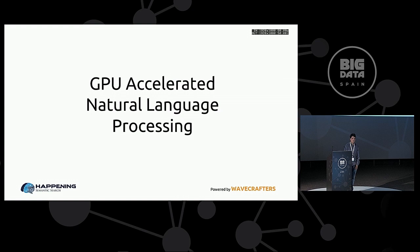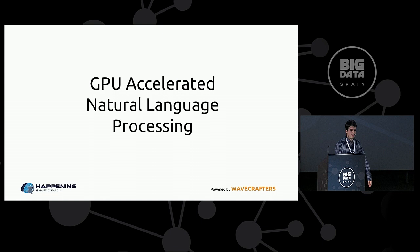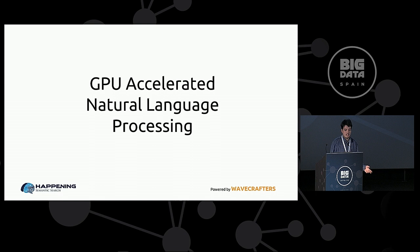Hello everyone, I'm Guillermo Molini. I work at Webcrusters, which is a small firm dedicated mainly to GPU computing. We have been doing a lot of machine learning projects during the past years, and eventually we became very interested in natural language processing. The main goal of this talk is to give you an introduction of what we understand natural language processing is, and to make a case for the need of GPU computing in machine learning in general, and in particular in natural language processing.